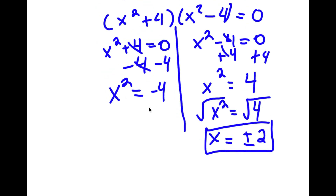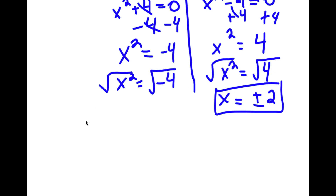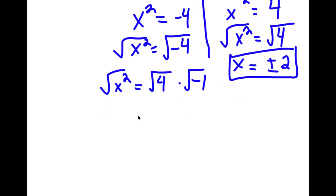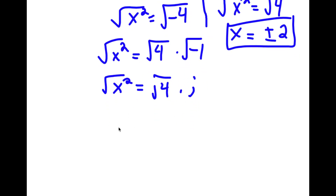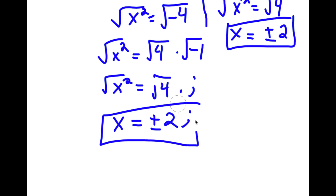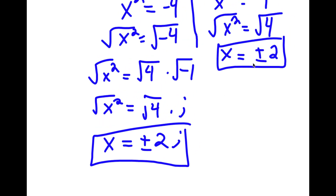Now for x squared equal to negative 4, I'm going to do the same thing. I have the square root of x squared is equal to the square root of negative 4. However, the square root of negative 4, I'm going to rewrite that as the square root of 4 times the square root of negative 1. And the square root of negative 1 is equal to the imaginary number i. So I have the square root of 4 times i. The square root of x squared is x, and the square root of 4 is positive or negative 2. So x is equal to positive or negative 2i, and x is equal to positive or negative 2.